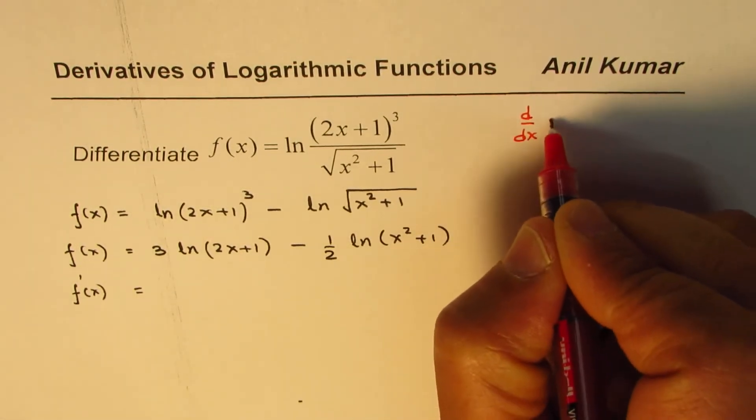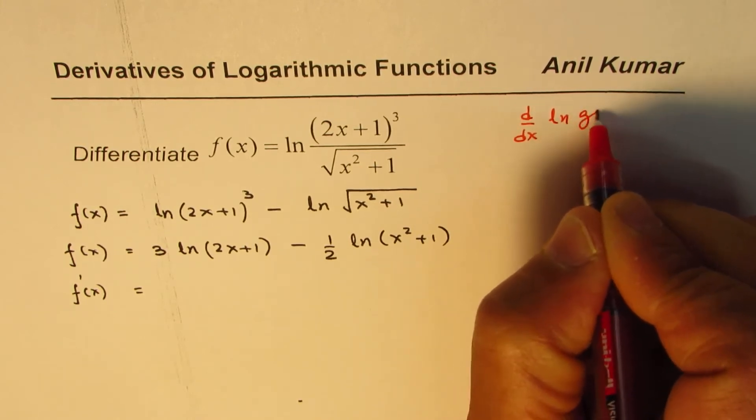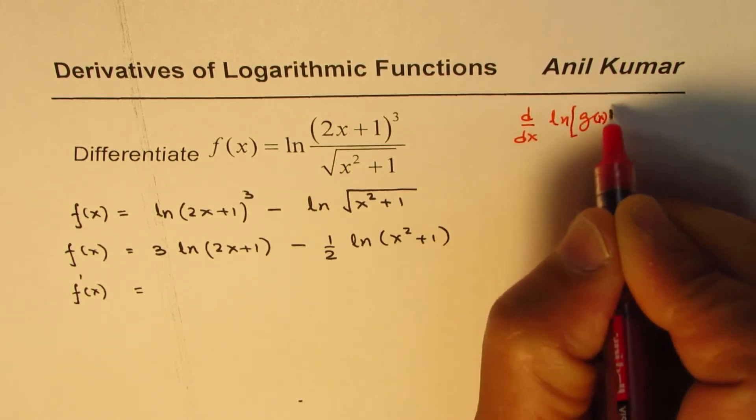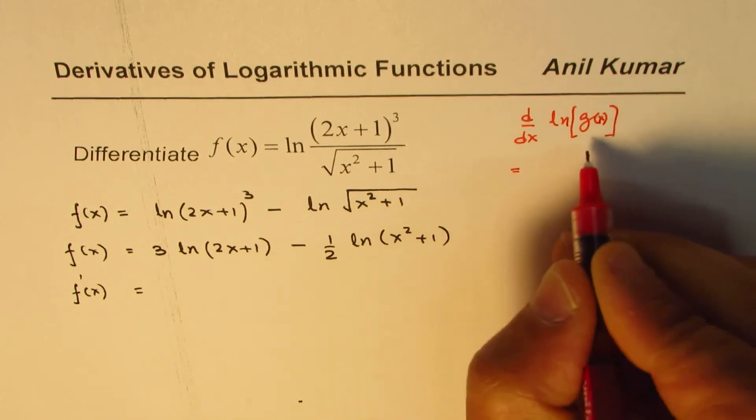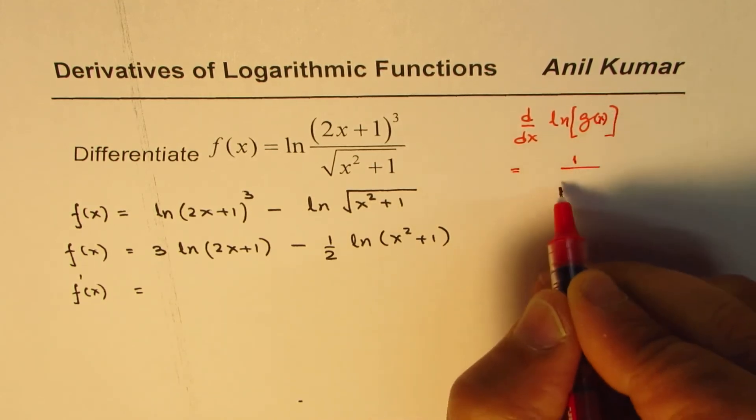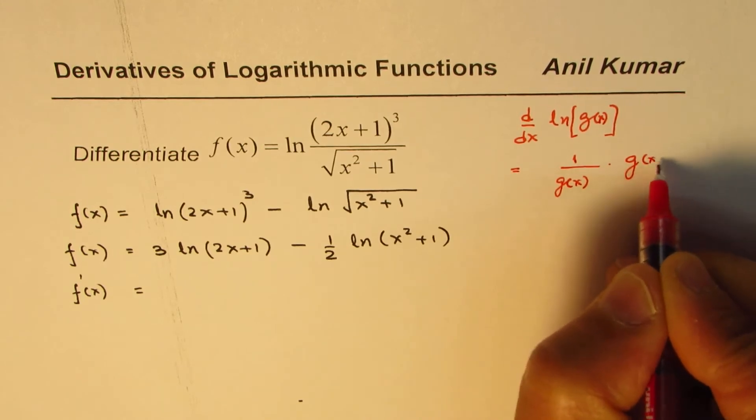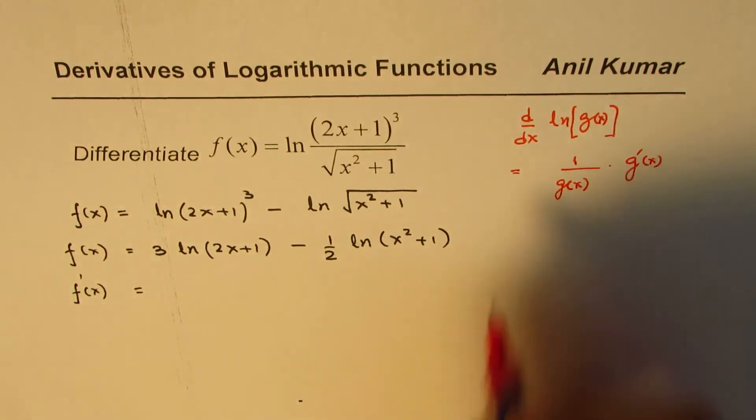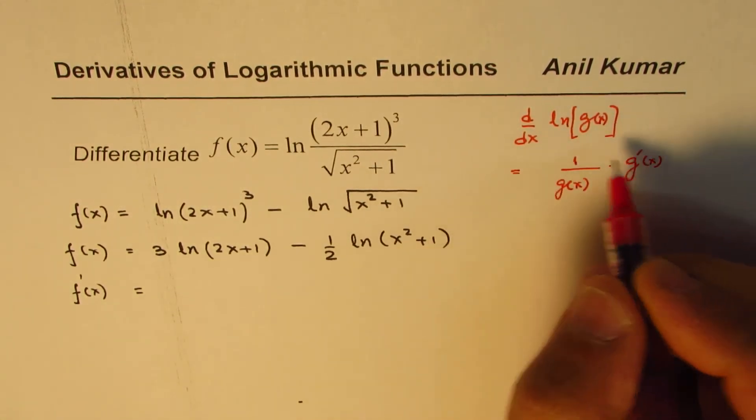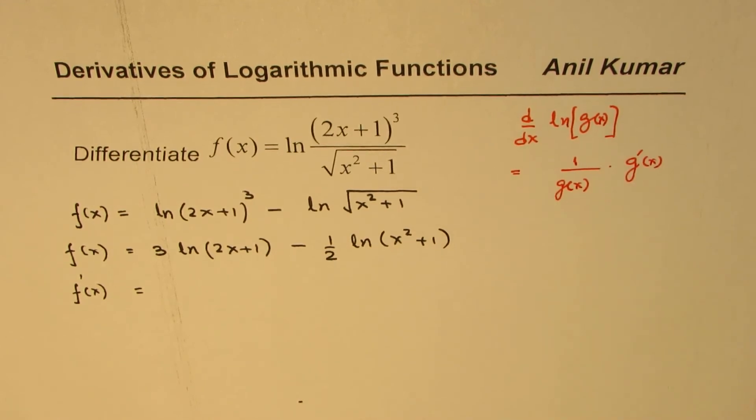d/dx of ln of a function g(x) equals 1 over g(x) times the derivative of g(x). That is what the derivative is. So let's apply this rule.